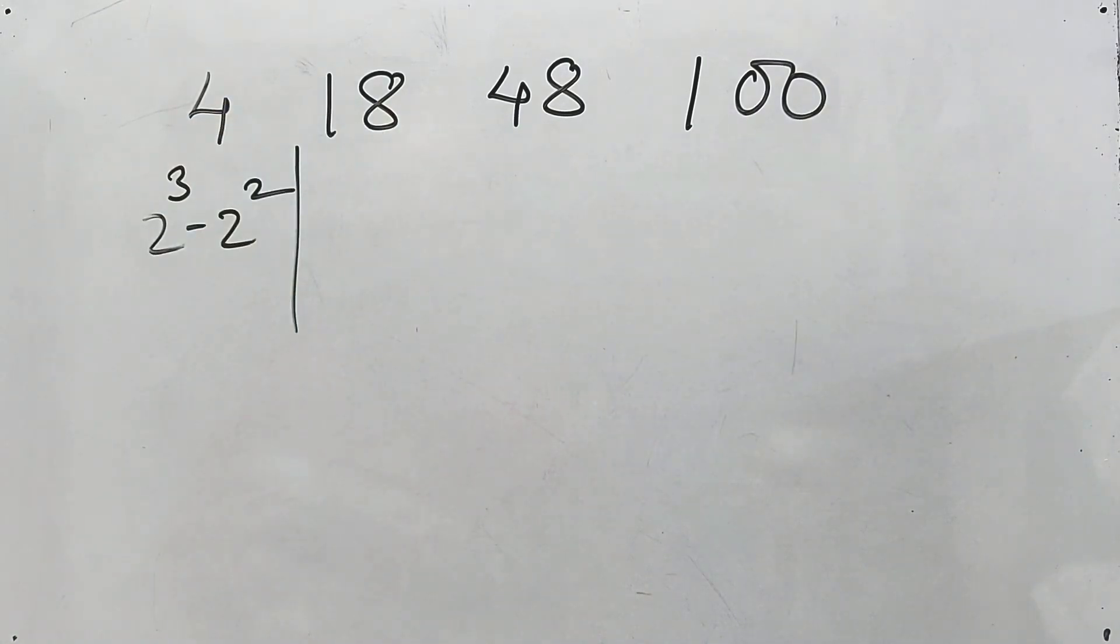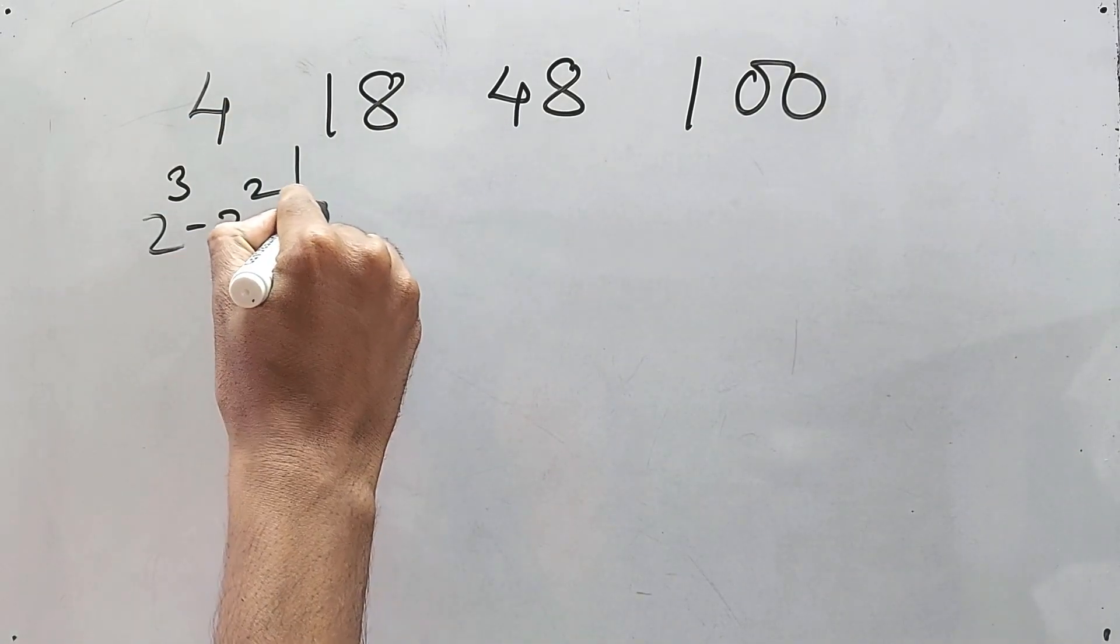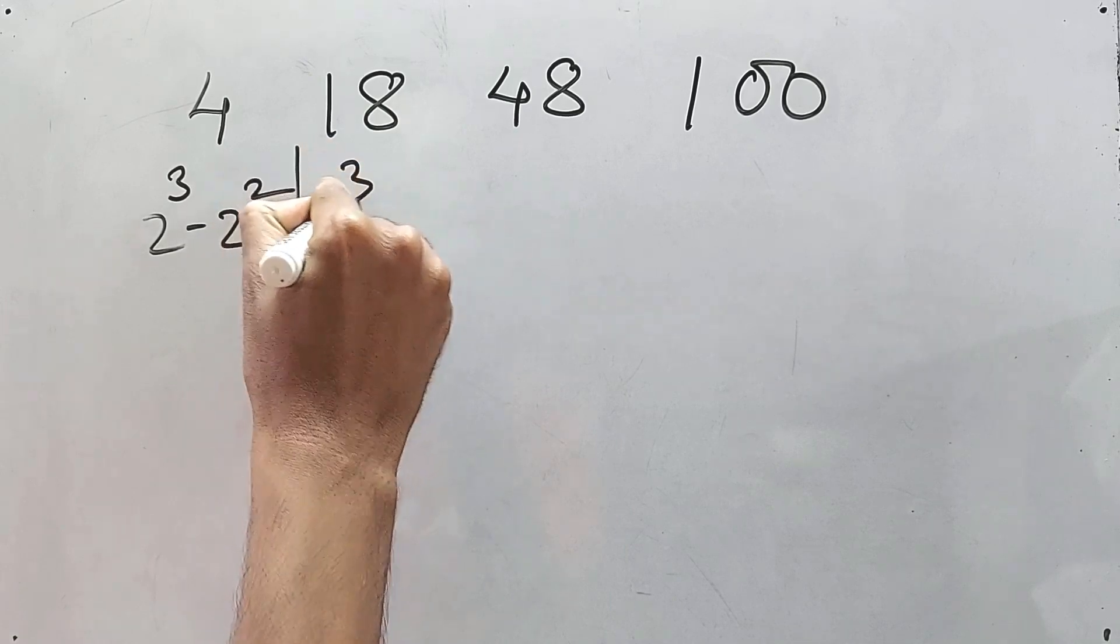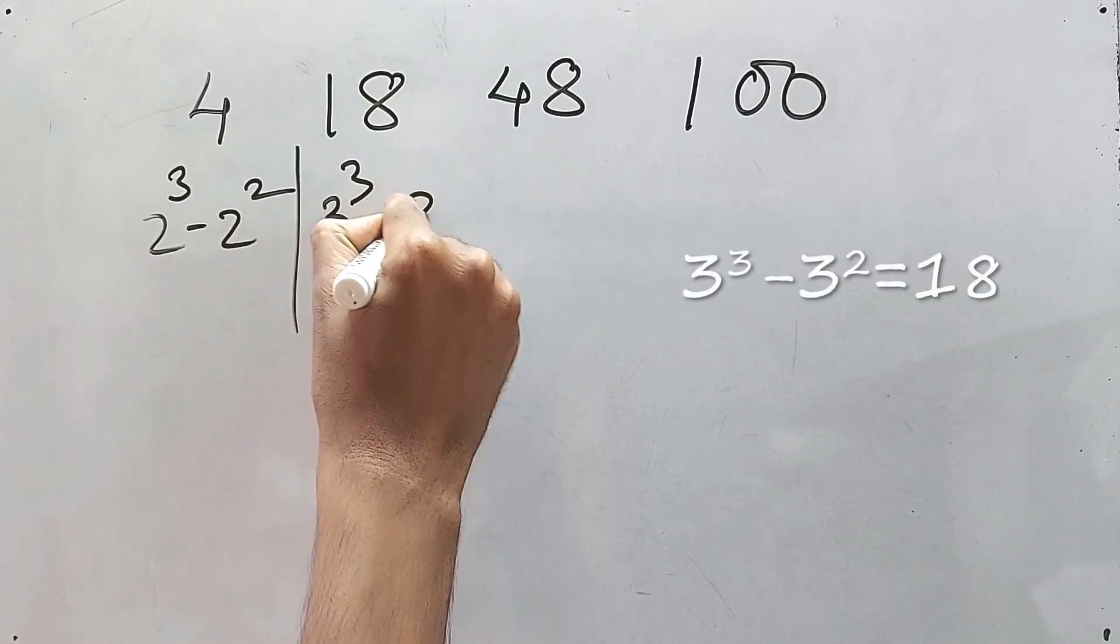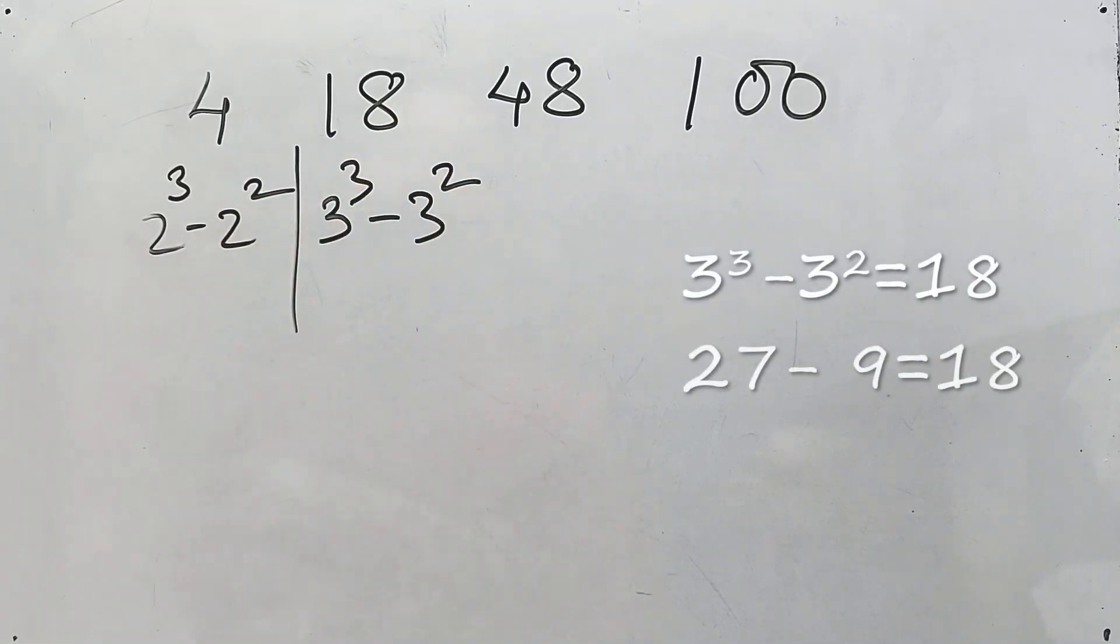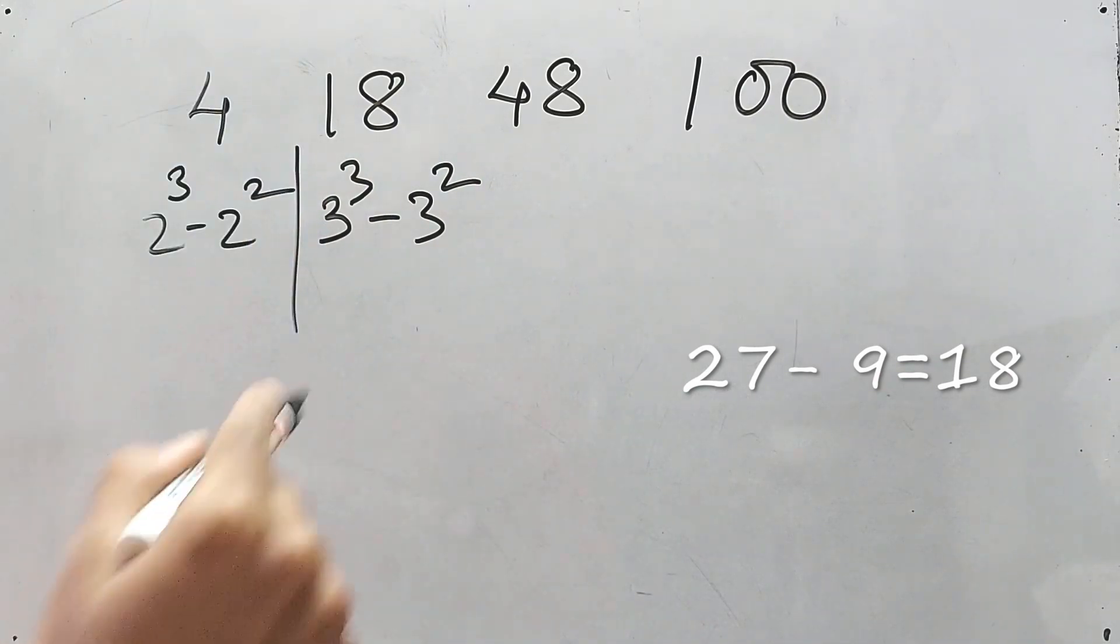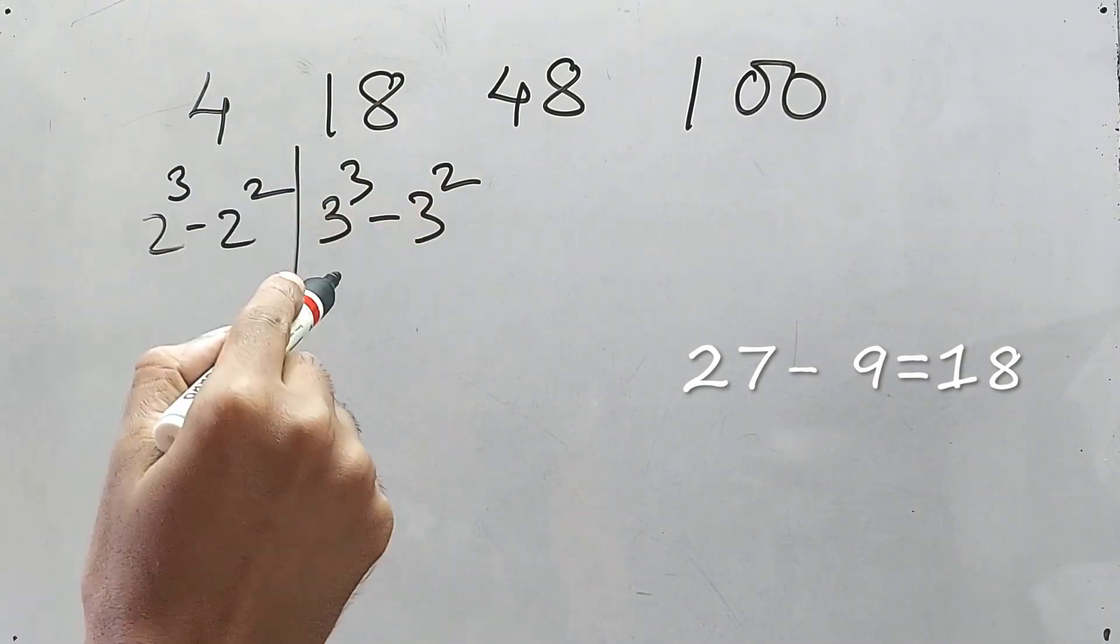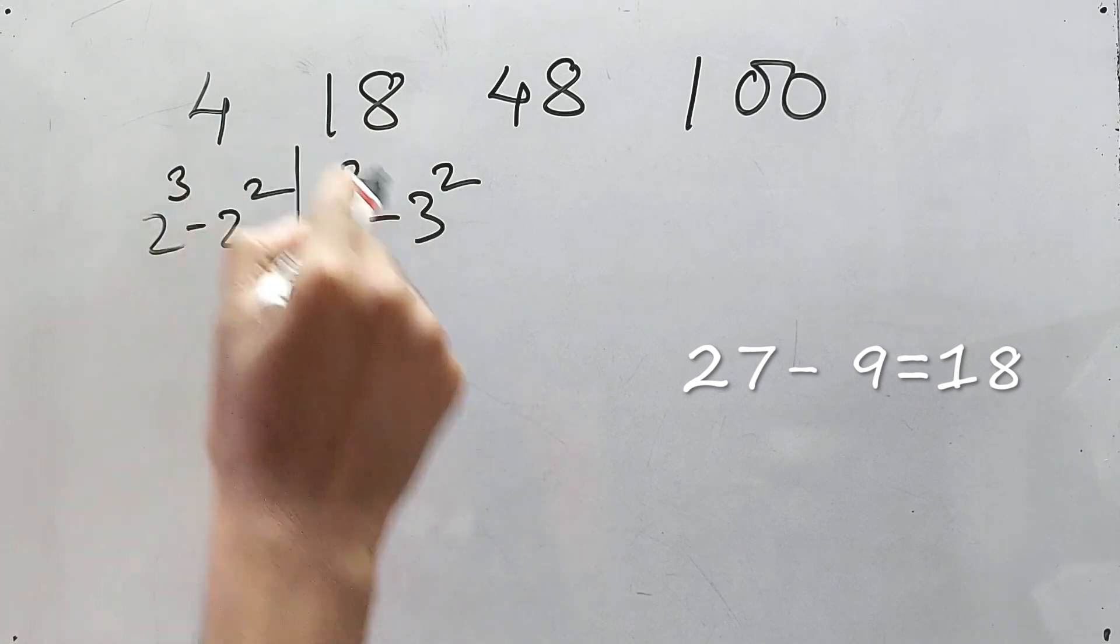Try 8 minus 4 is 4. 2 cube is 8, right, we know this. What about 18? 18 is again 3 cube minus 3 square.